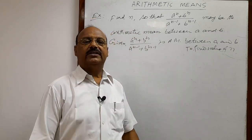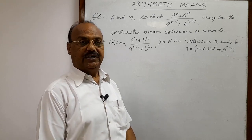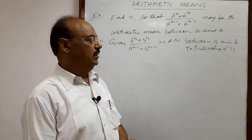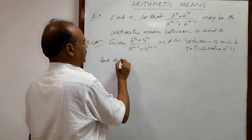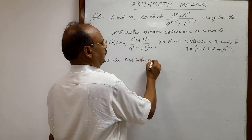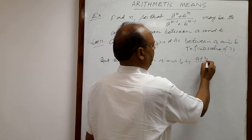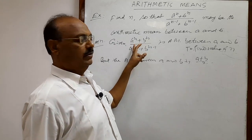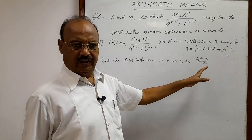We have already discussed in previous videos when we started the topic arithmetic mean. In the introduction of this topic we discussed that the arithmetic mean between a and b is a plus b divided by 2. We have already studied this, and here that condition is given. So both of these expressions will be equal.